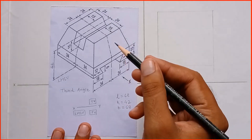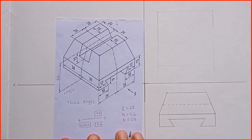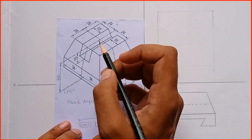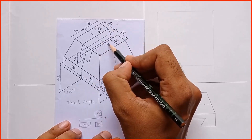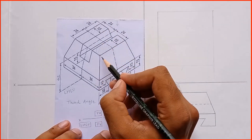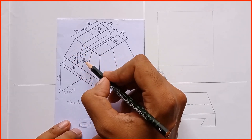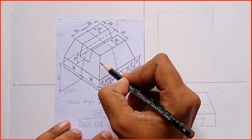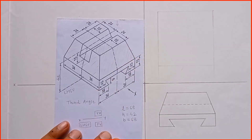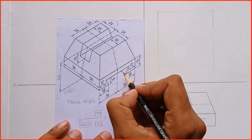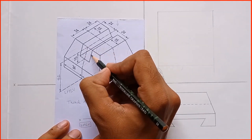For the top view, we have to observe this object from the top. Now let's identify the surfaces which are visible in a top view. This surface is visible, this surface is also visible, and this is an inclined face so some part of that is visible when we project it. Similarly, this inclined face's edges are visible in a top view, and this slot is also visible.